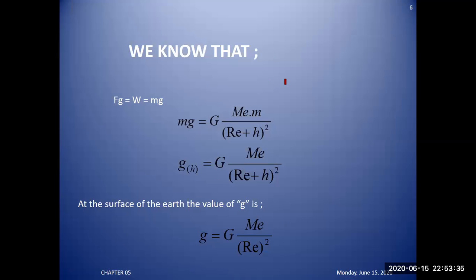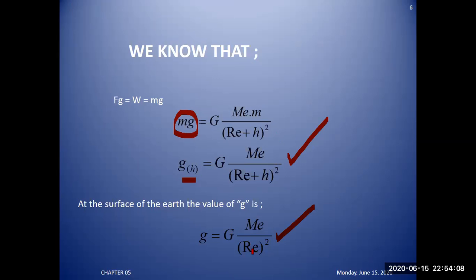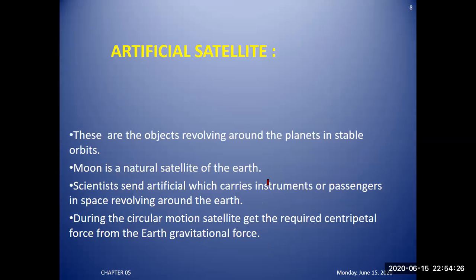The gravitational force acting equals the weight of the object, which is mg. So: mg_h = G times M_e divided by (R_e plus h) squared. At the surface, the value of g is calculated using only R_e as the distance. When you move any object up to a height h, the distance becomes R_e plus h, and you can see from the formula that the value of g decreases.